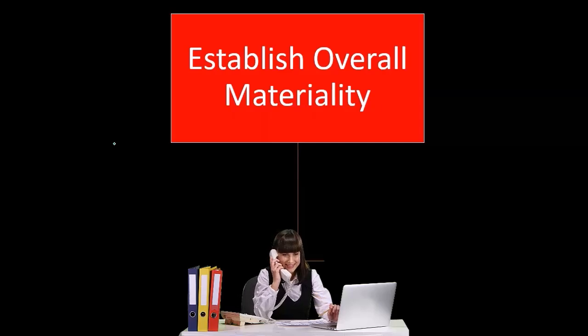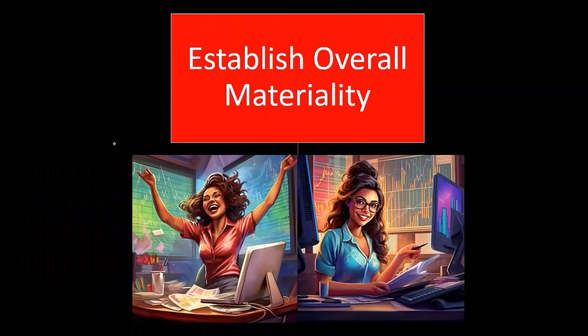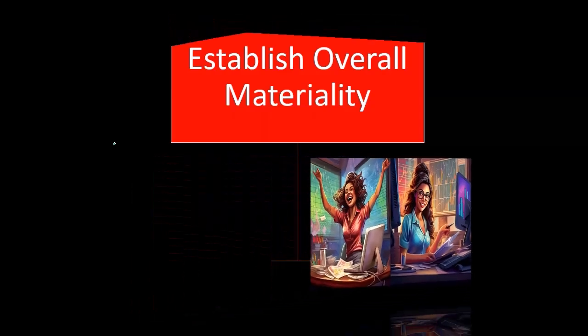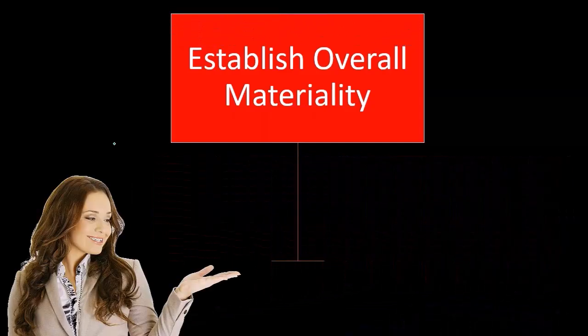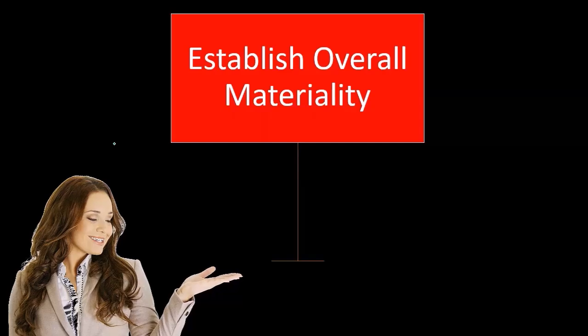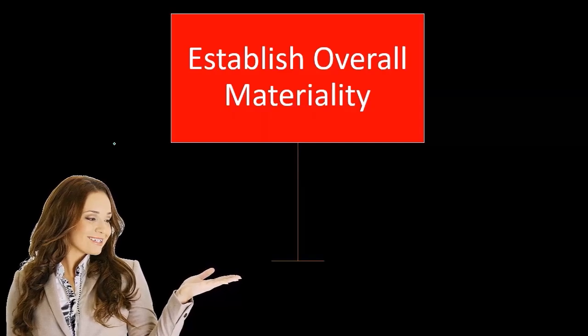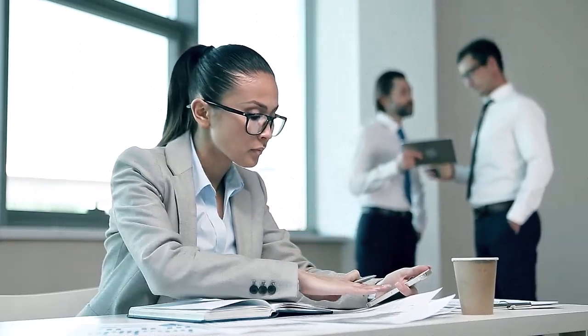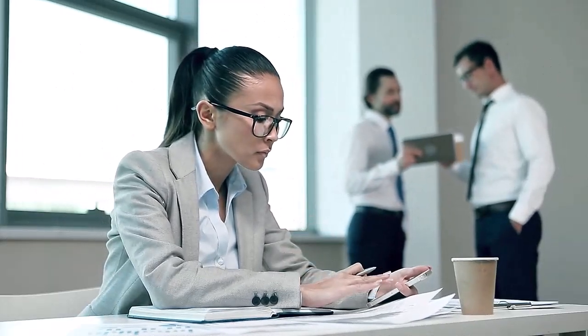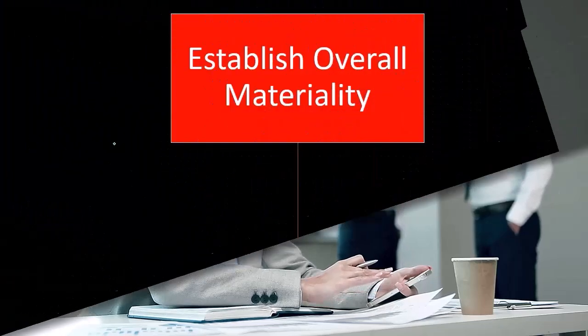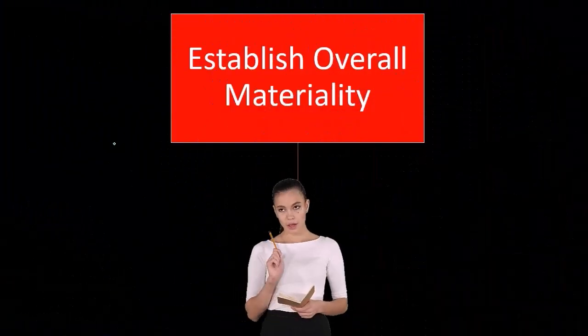You might think that our ultimate goal is going to be eliminating all misstatements, and then whatever we don't get is fine. But that's not the way we have to do it if we're trying to do this efficiently. We have to say, okay, what's going to be the material misstatement that would be acceptable — that would be under the threshold — and then start to plan our process from there.